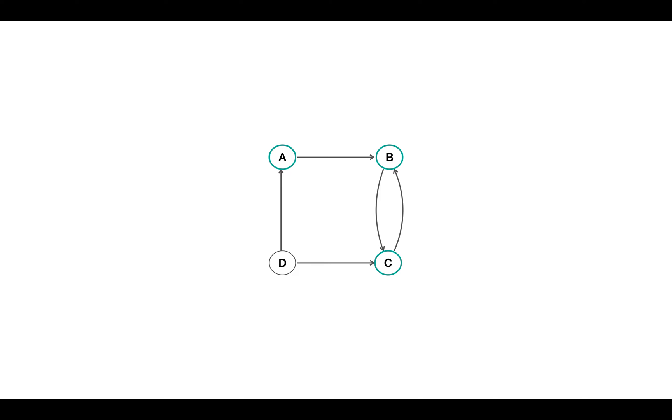So for sure, this is not a strongly connected graph. The SC components, or strongly connected components, in this graph are BC, as we can go to vertex C and C can reach back to B, and A and D being individual vertices.